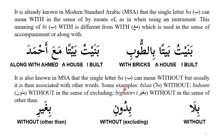Another meaning of the letter Ba, also known in Modern Standard Arabic, is 'without.' For this meaning it is usually associated with other letters or words such as 'Bila,' which simply means 'without'; 'Bidooni,' which means 'without' in the sense of excluding something; and 'Bayr,' which also means 'without' in the sense of 'other than.'